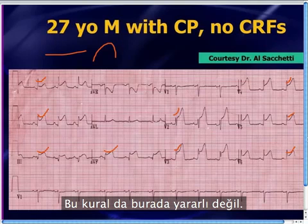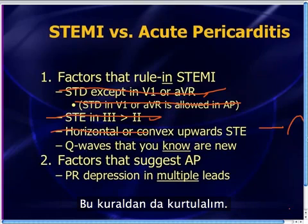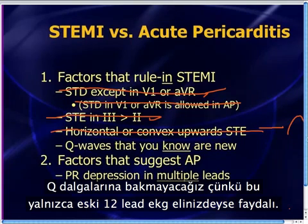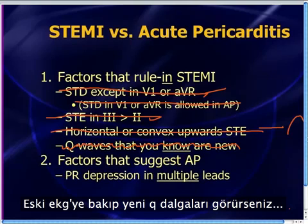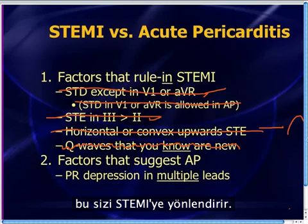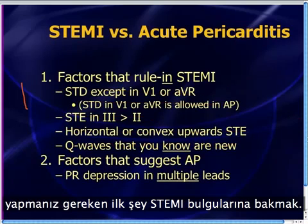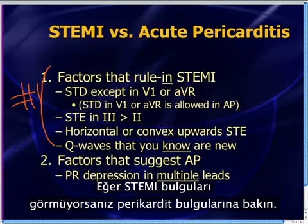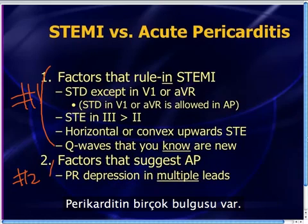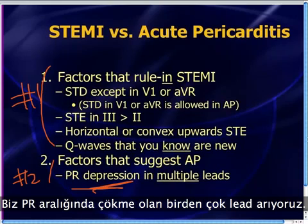We won't worry about Q waves here since that only applies if you have old 12-lead EKGs for comparison — new Q waves compared to a prior EKG pushes you toward STEMI. The main thing we've discussed is to look for signs of STEMI first; if you don't see them, look for signs of pericarditis. The main sign of pericarditis is PR segment depression in multiple leads.